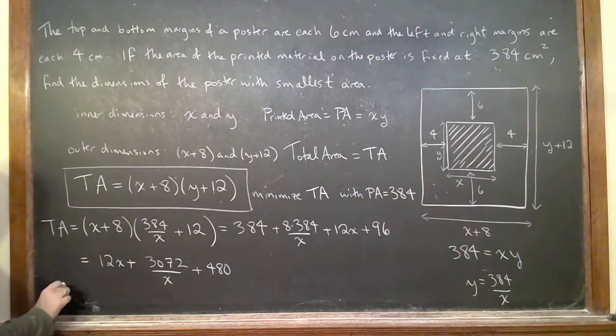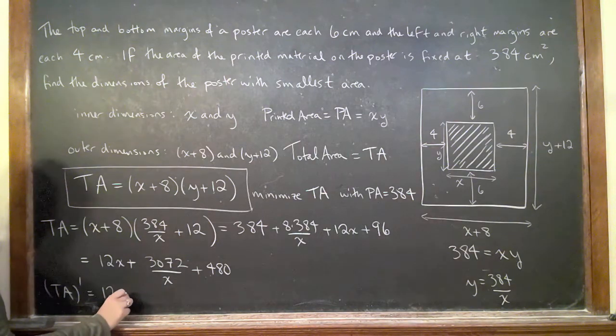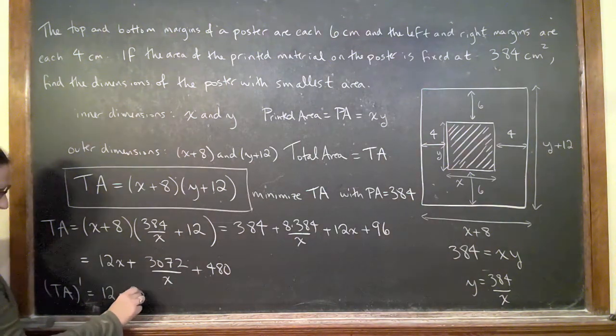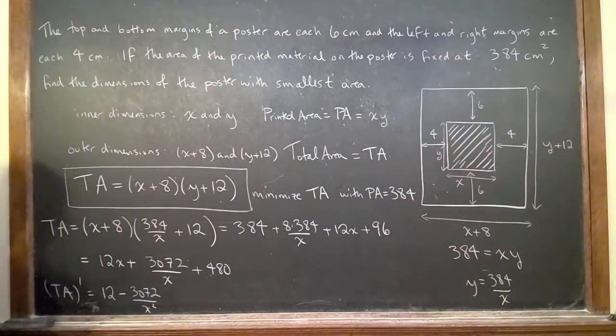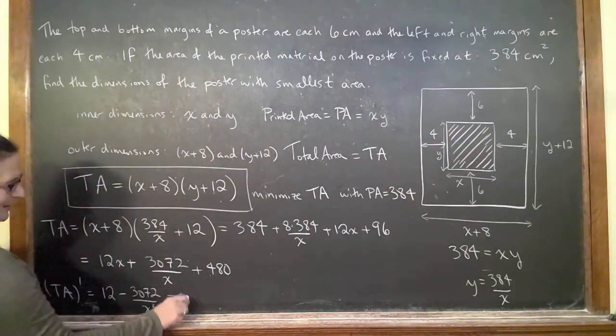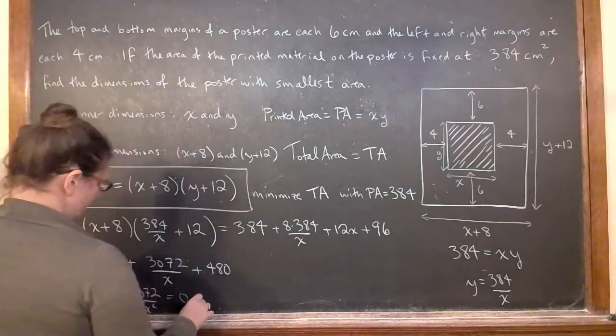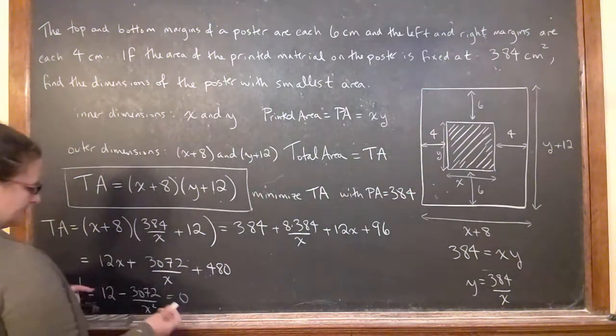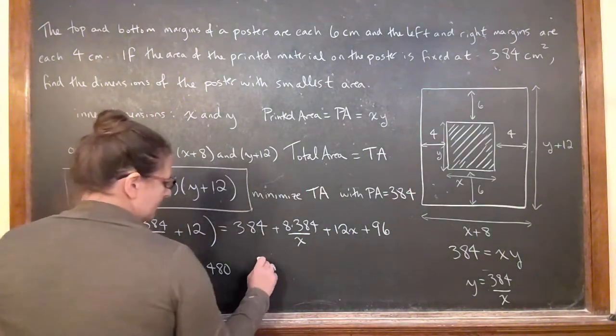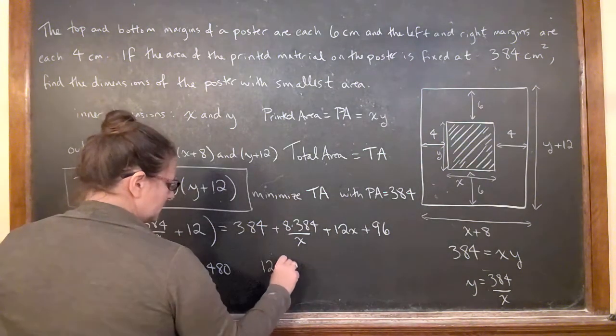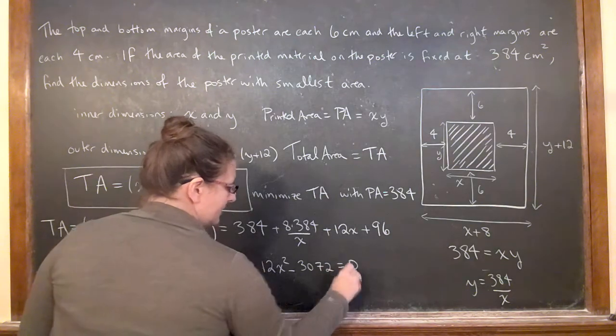I've got 12 minus 3072 over x squared plus 0. I'm going to make that equal to 0 because I need to find the minimum. I want to put that on a common denominator, just let them equal each other. I'm going to get 12x squared minus 3072 equals 0.